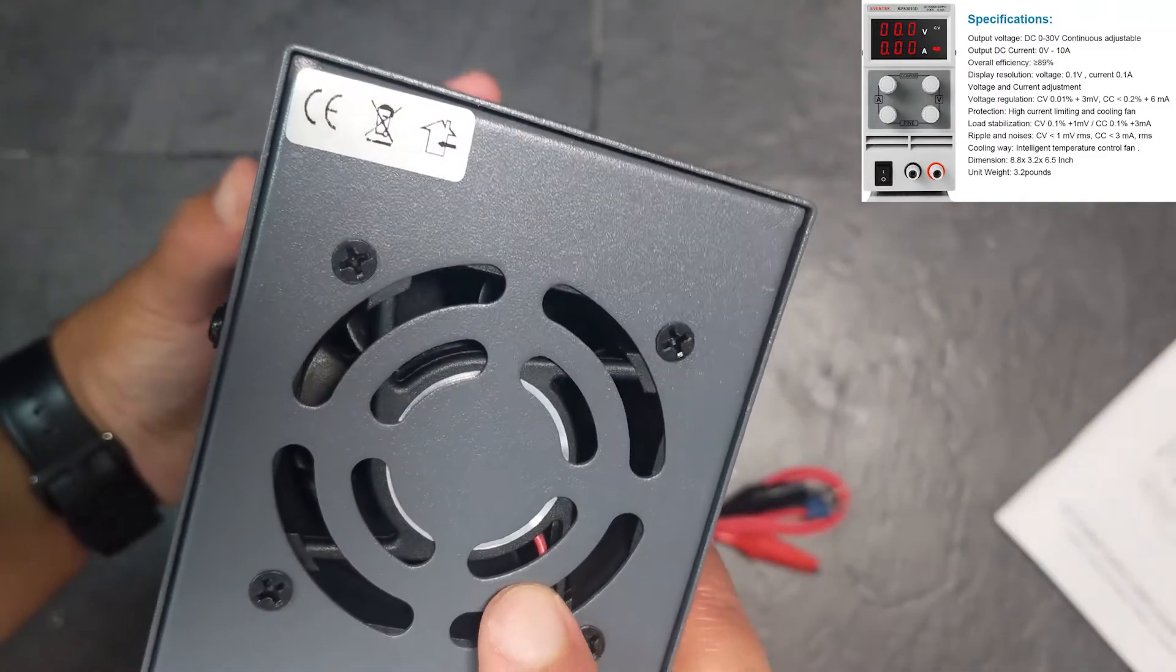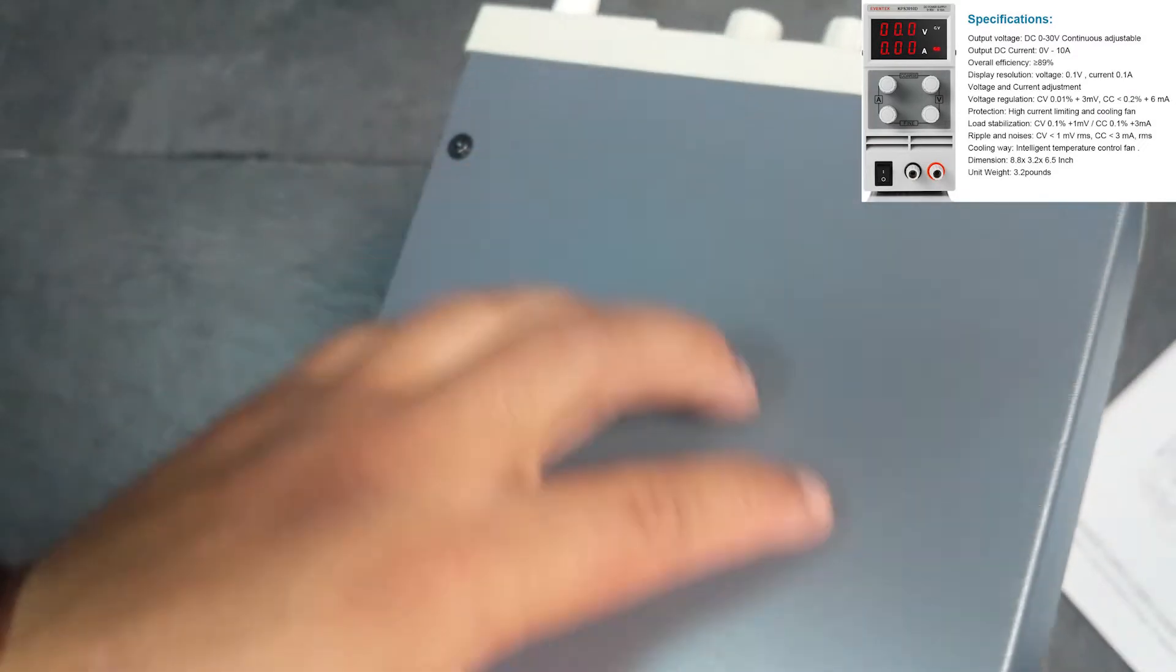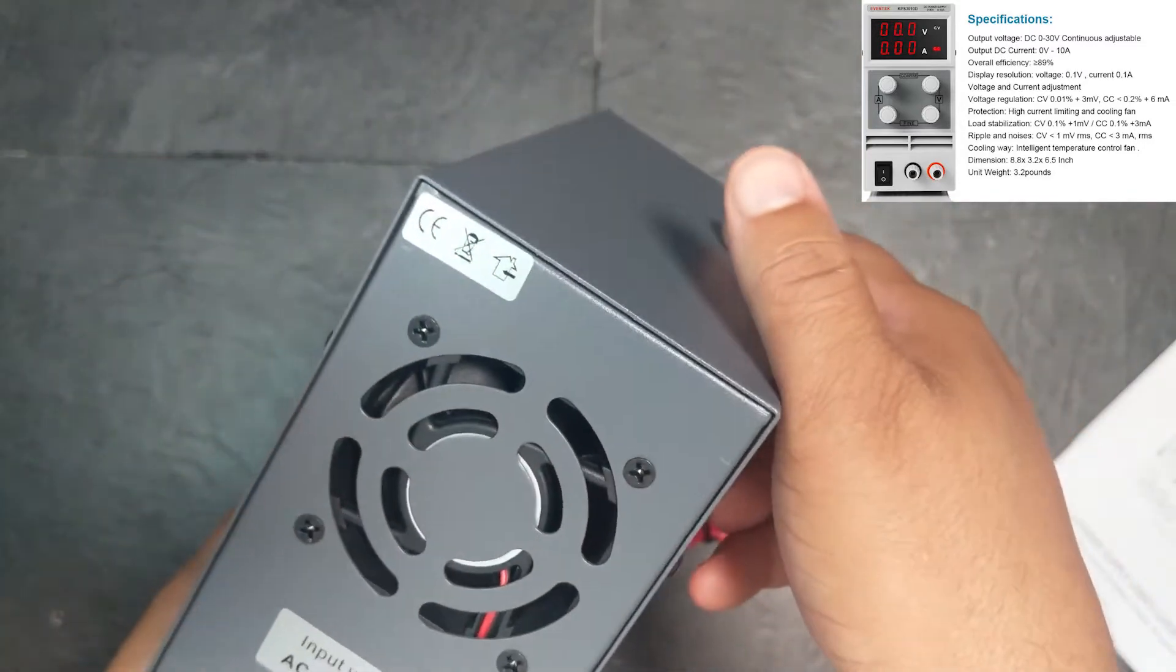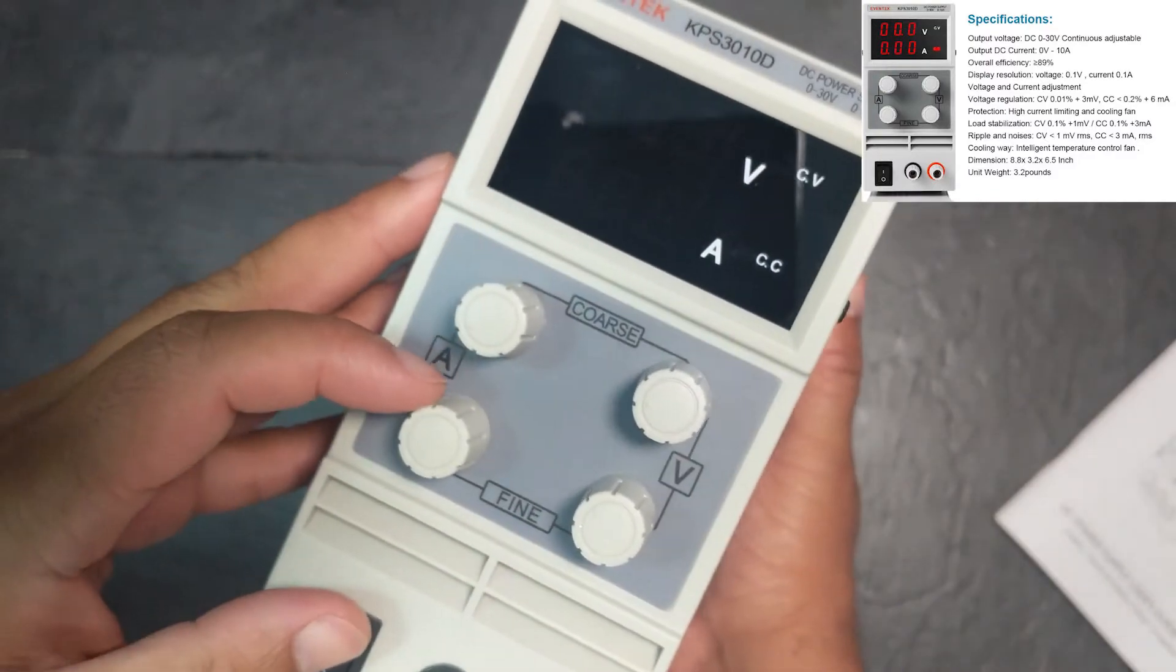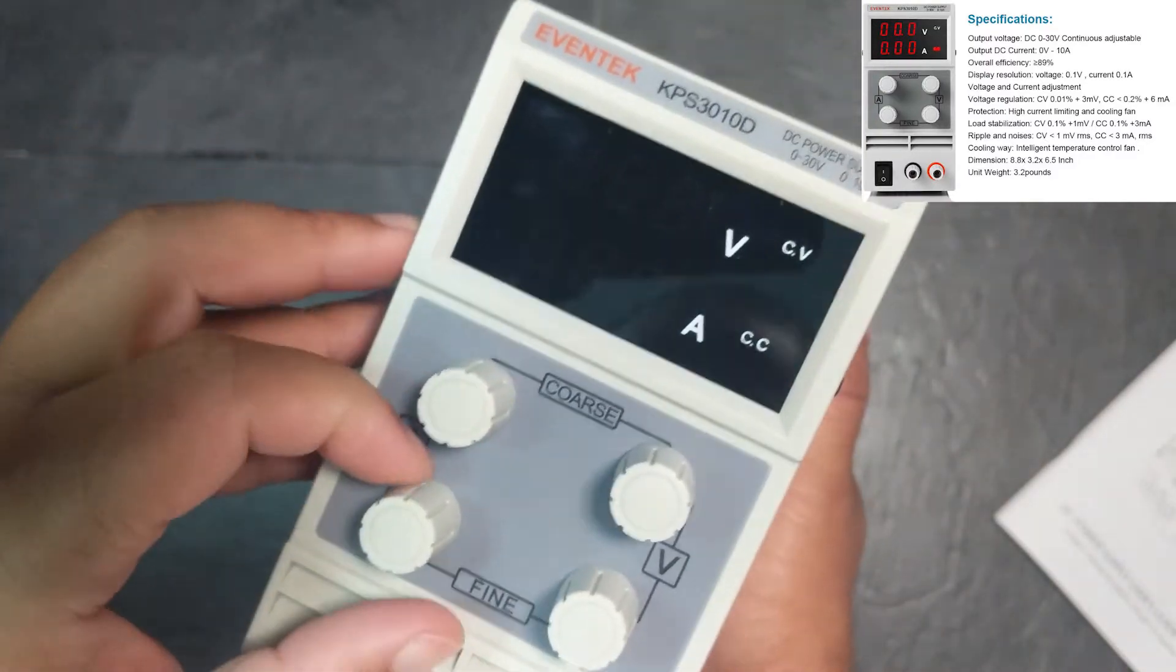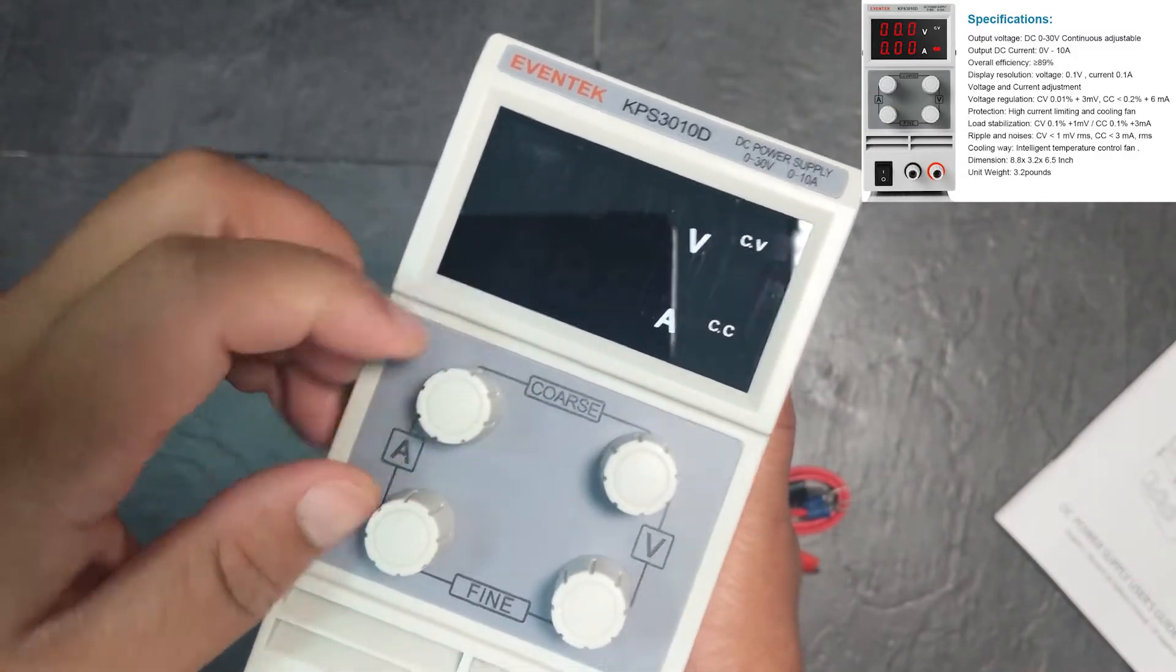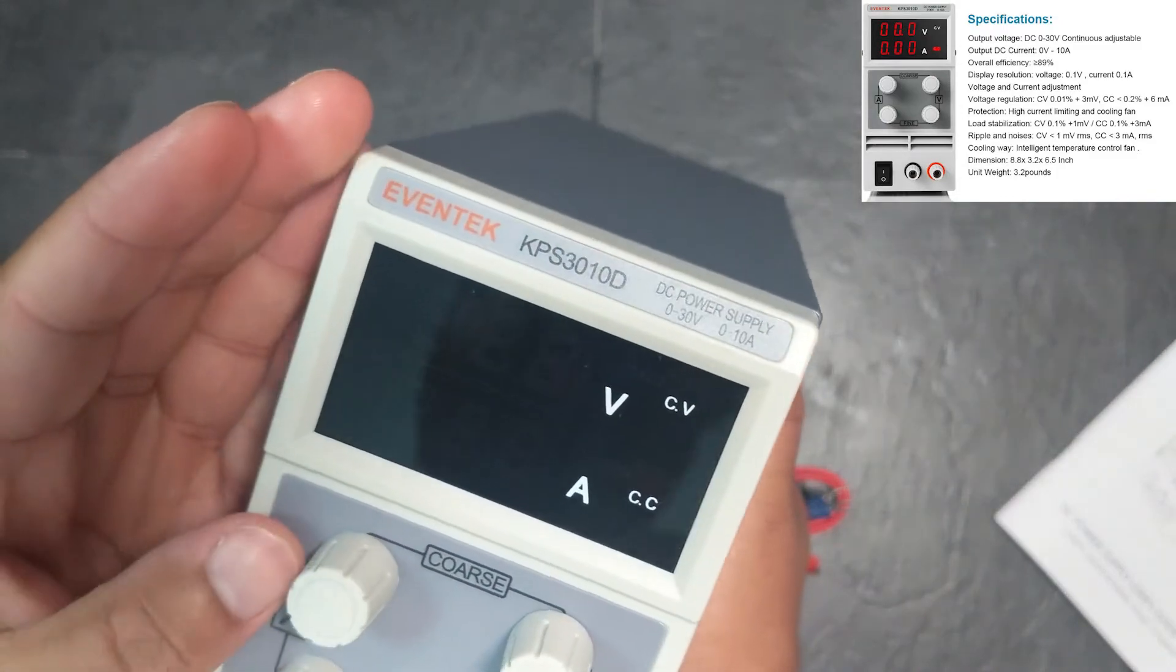Input voltage, nice big space for the fan. There's no cooling holes on the sides, which I'm surprised about. Some here. So what do we have? We've got on and off, fine and coarse. So control current, I assume quickly and then finitely, and then same with voltage. Nice and simple.